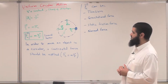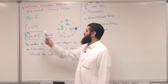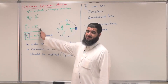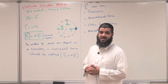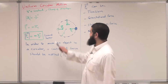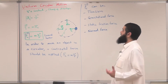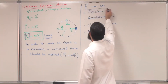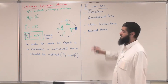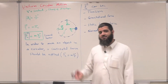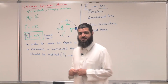To summarize: if you would like to move an object in a circular path, you need to apply a centripetal force. That centripetal force has a magnitude of M·V² over R, and its direction is always toward the center of the circular path. This FC can be any of the forces — it might be tension, gravitational force, static friction, normal force, or even electric or magnetic force, though we do not cover those in Physics 1. Thank you.